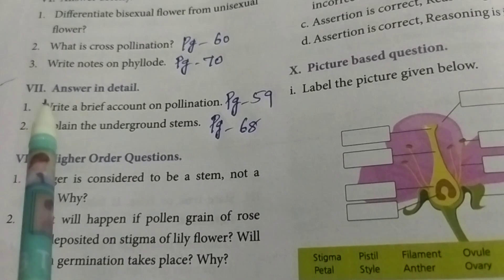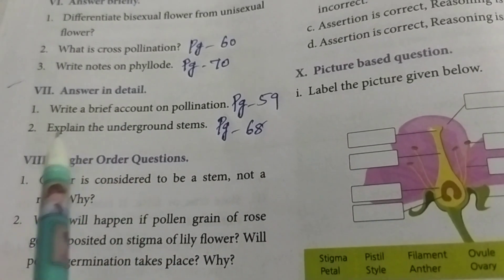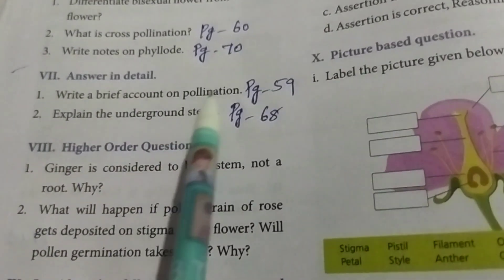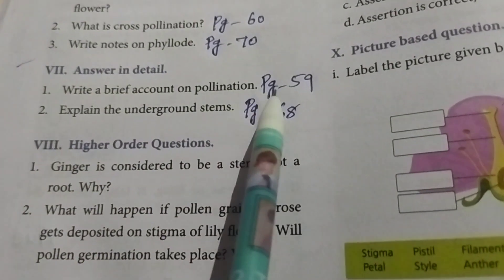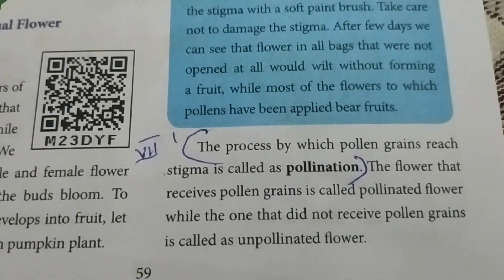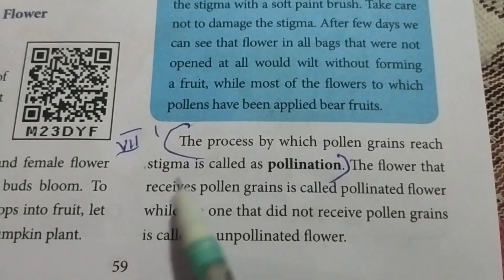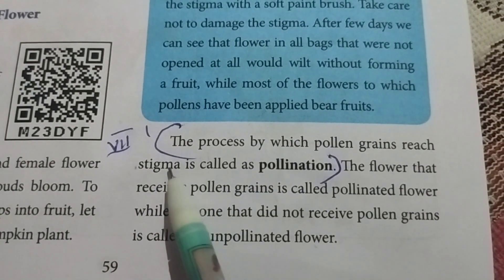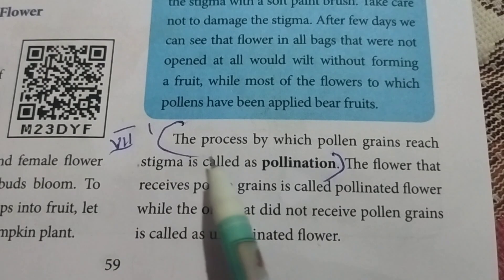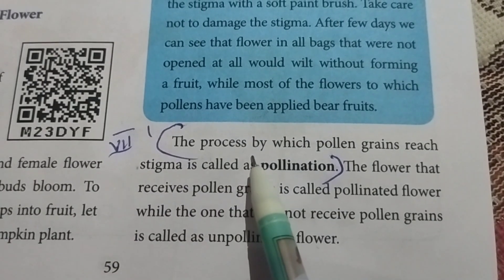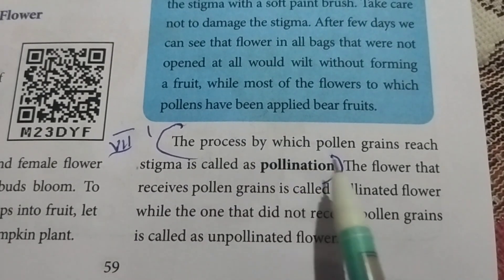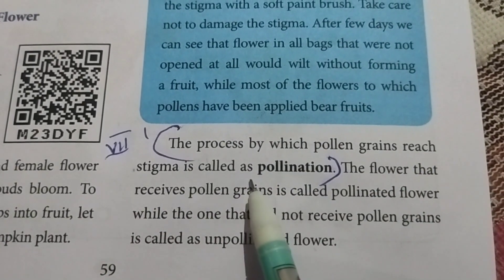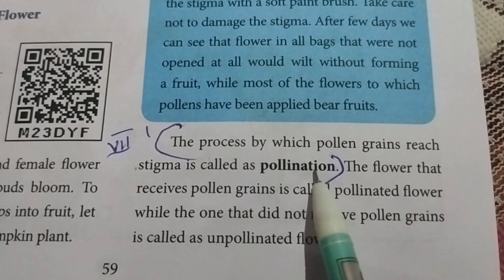Seventh Roman numeral: Answer in detail. First one: Write a brief account of pollination. Referring to page number 59. The process by which pollen grains reach the stigma is called pollination.